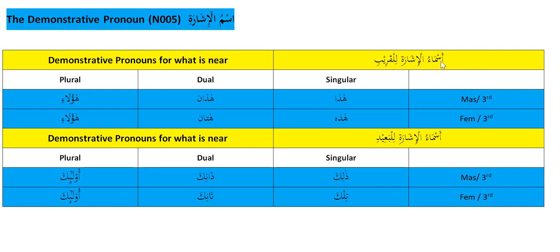Asma' is the plural of ishara, meaning pointing or demonstrative. We have 'asma'ul ishara lil-qariib' — demonstrative pronouns for what is near — that's in this section, these six. And then 'asma'ul ishara' for what is far.